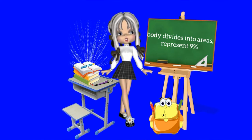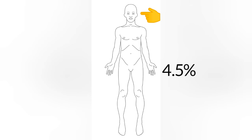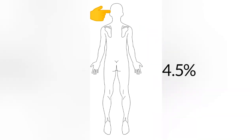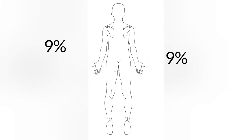which represent nine percentage. 4.5 percentage for the front side of the head and neck, 4.5 percentage for the back side of the head and neck. Anterior chest nine percentage, abdomen nine percentage, posterior chest nine percentage, and the lower half of the back nine percentage.